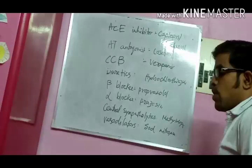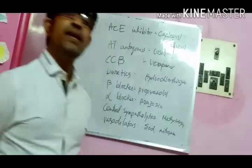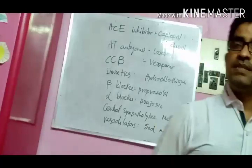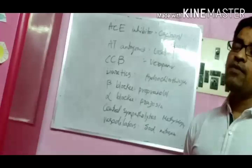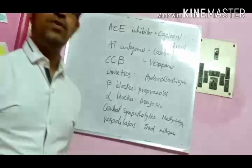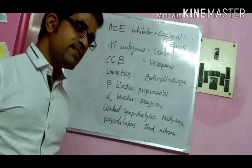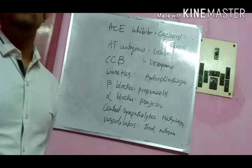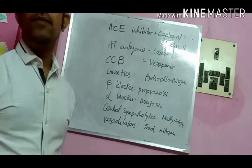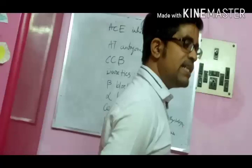Next is beta blockers. Adrenergic drugs act on two types of receptors — alpha receptors and beta receptors. Beta activity increases cardiac activity. So a beta blocker, when given, will minimize cardiac activity — meaning the rate of contraction and force of contraction will decrease. If that decreases, definitely cardiac output will also decrease.